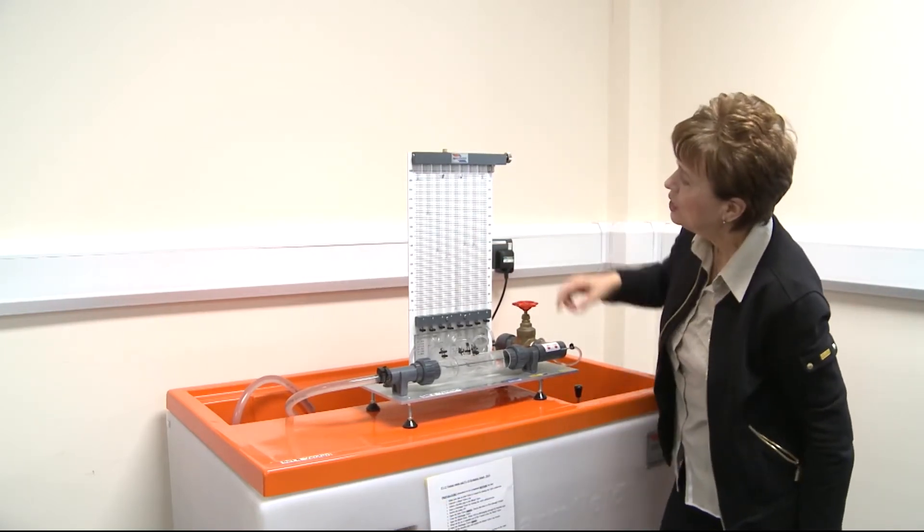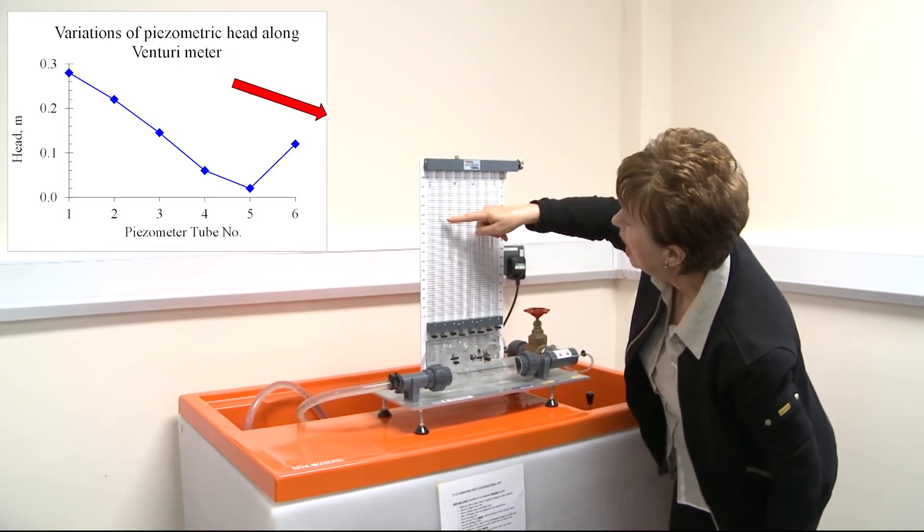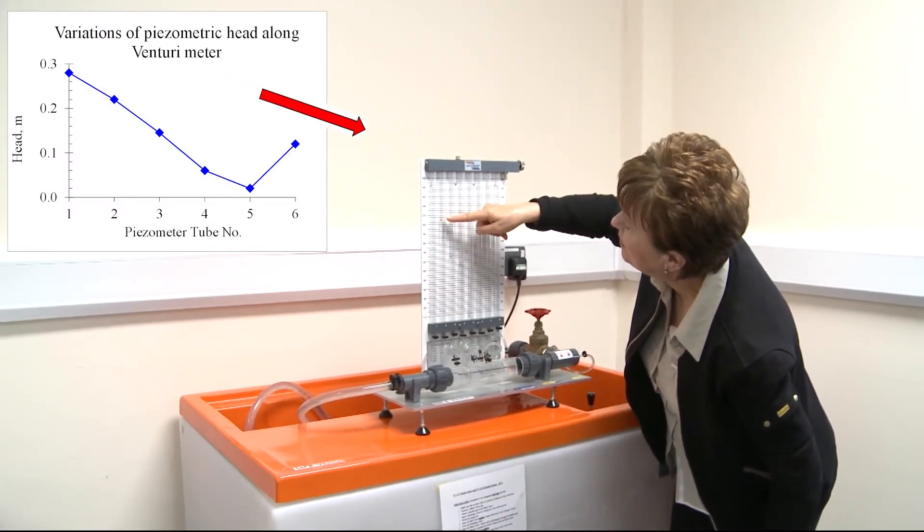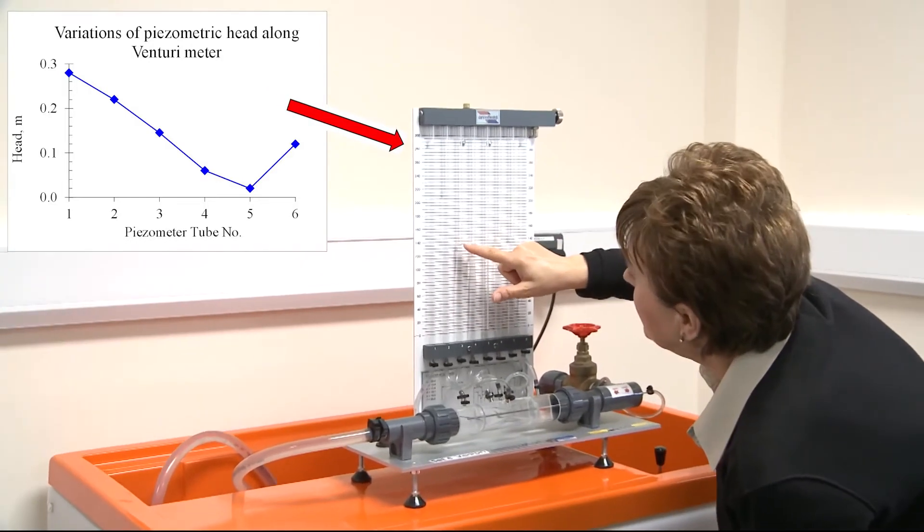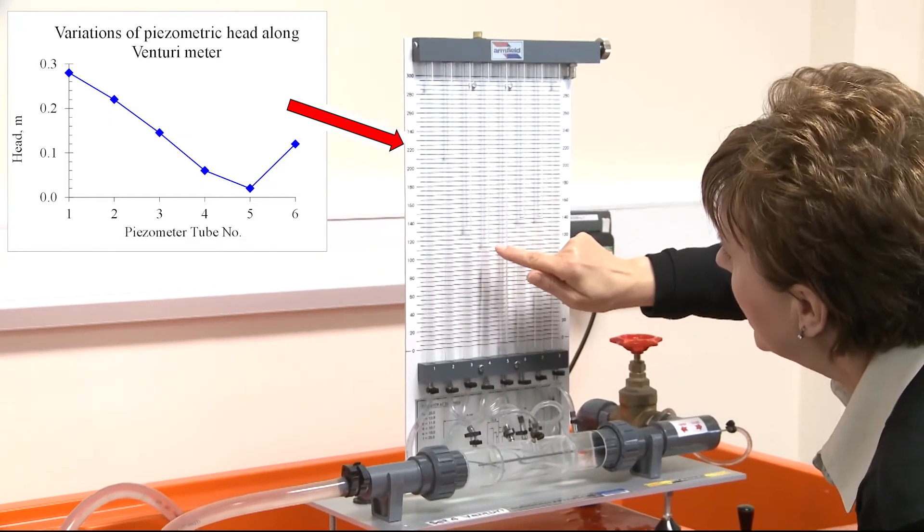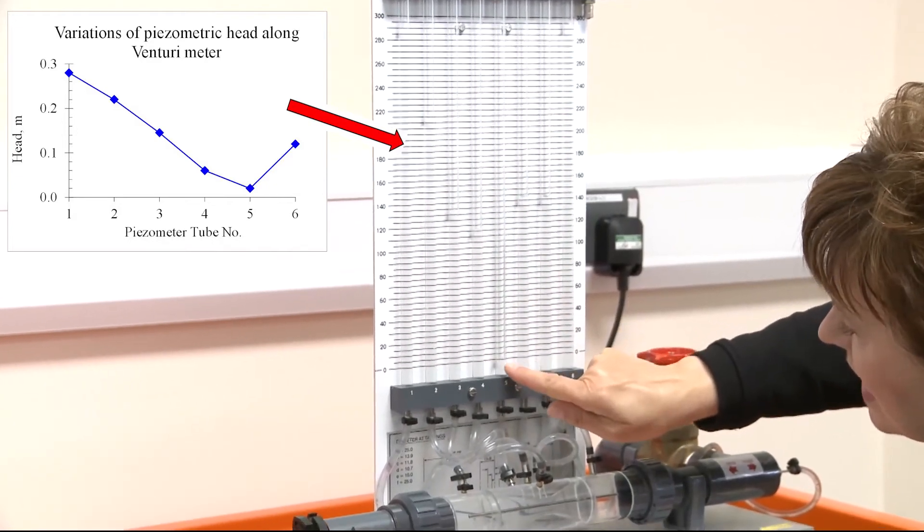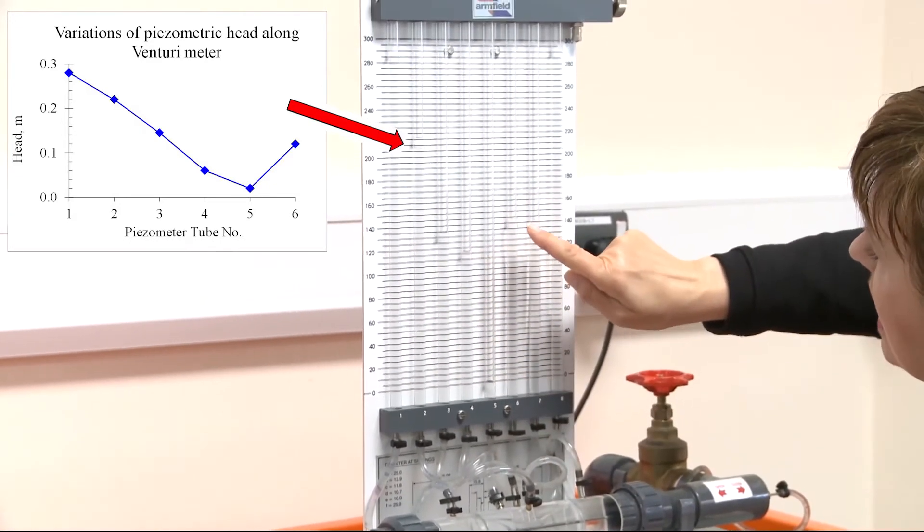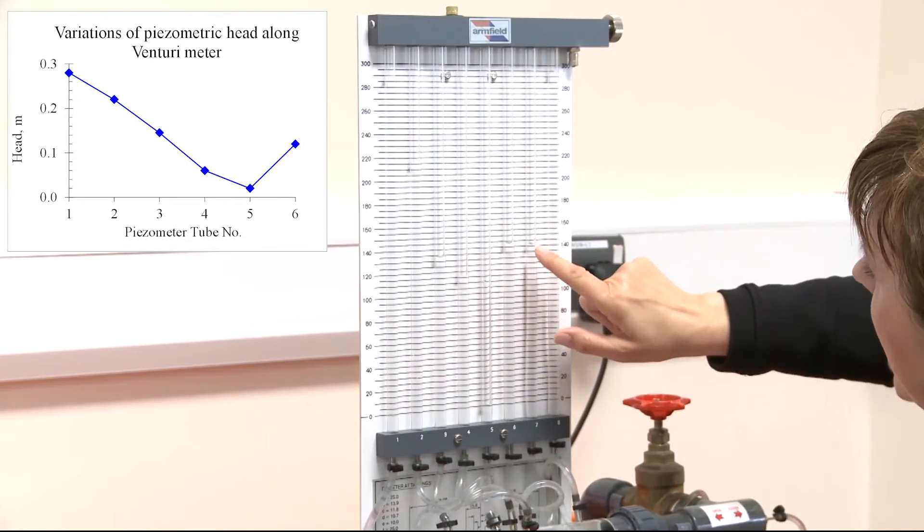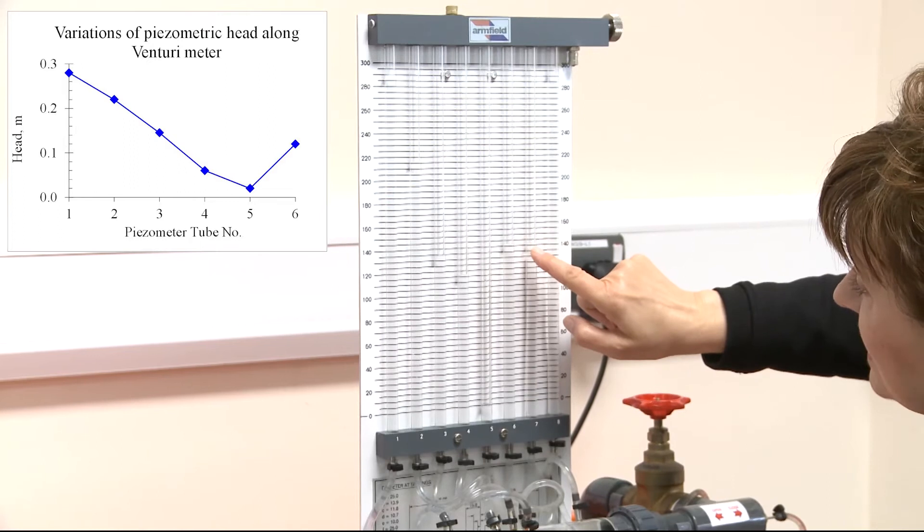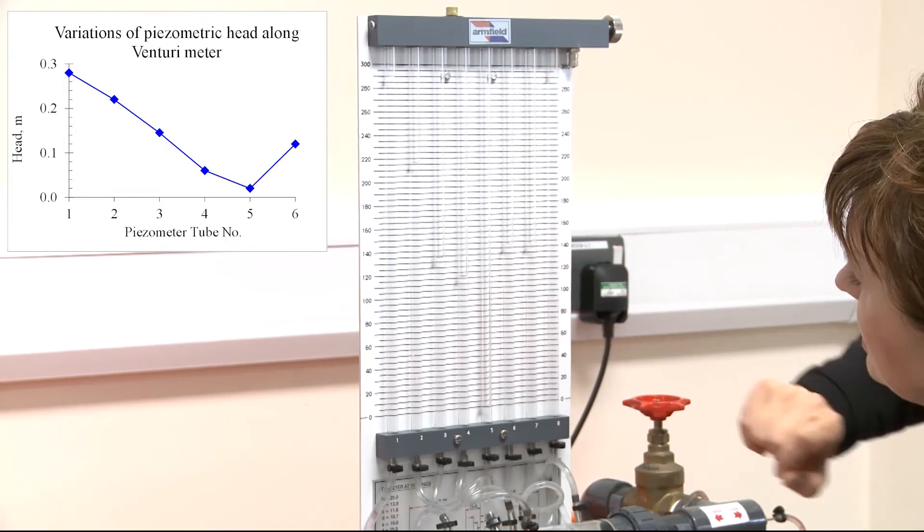So my readings here is 290, 215, 135, 117. Here it's zero. Here we have around 145, and here is also, which is number seven, which I don't take this reading, but this is also around 145.